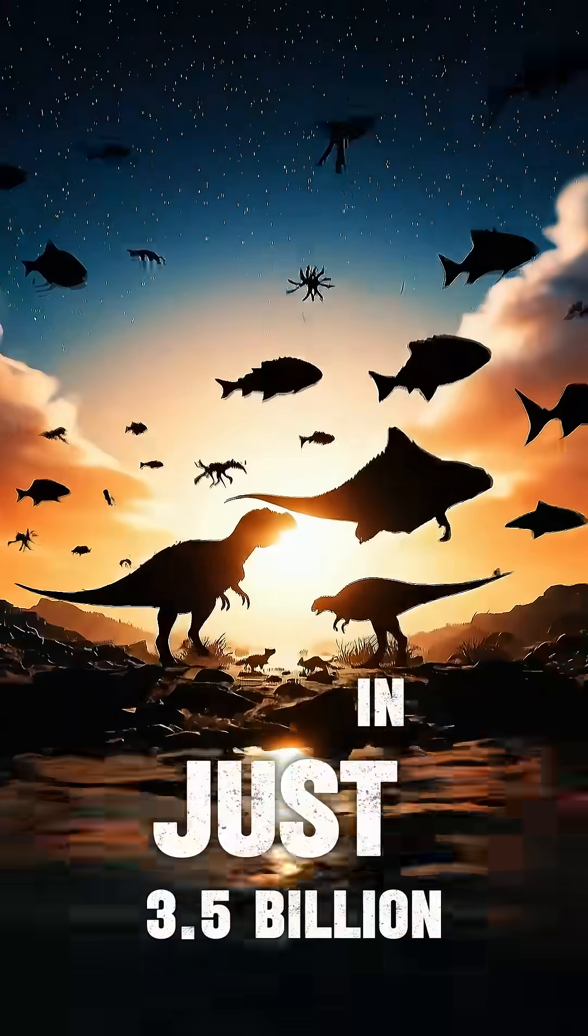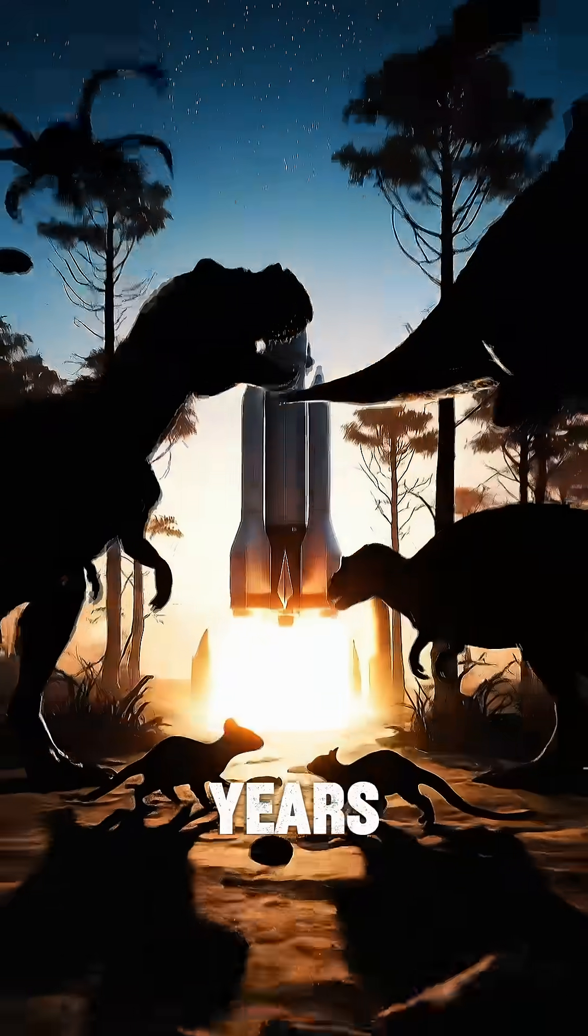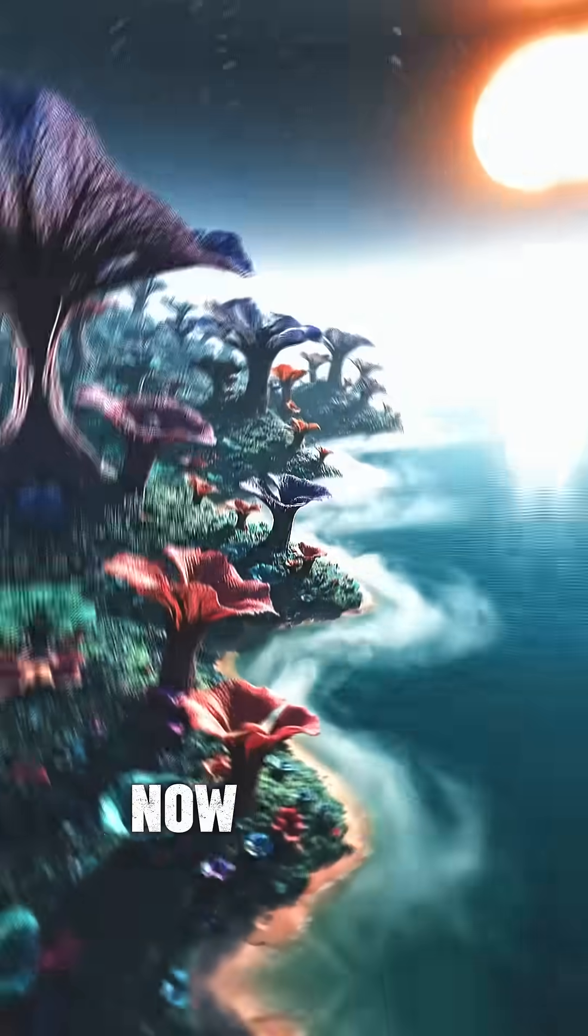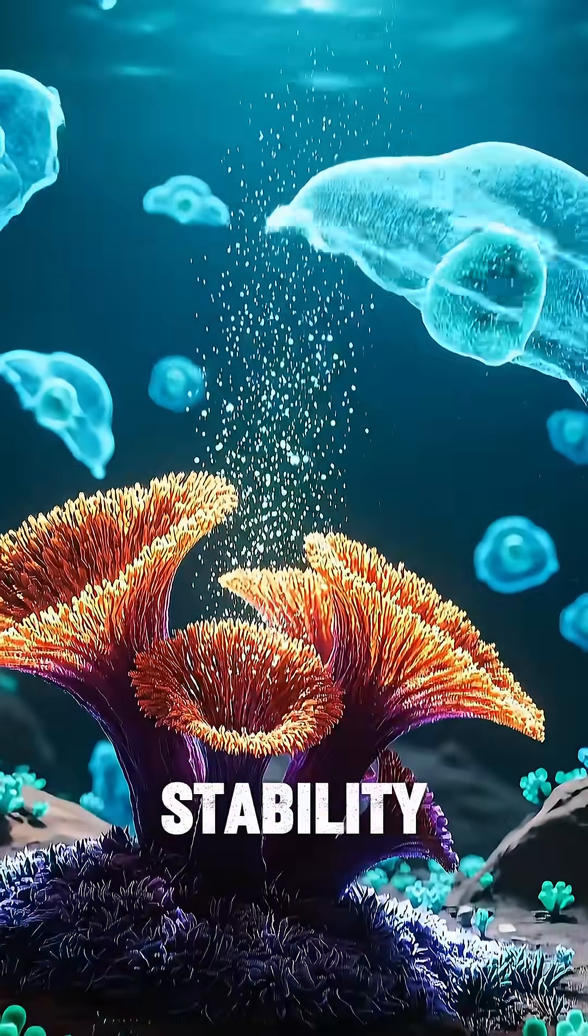Life on Earth evolved in just 3.5 billion years, from microbes to rockets. Now imagine evolution with 50 billion years of stability.